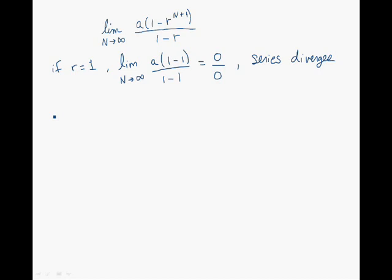We now analyze the limit for when R is greater than 1. On the denominator, we have 1 minus R, which is a constant. On the numerator, we have an exponential function. As N tends towards infinity, this tends to infinity as well. Hence, the limit tends towards infinity, and the series diverges.